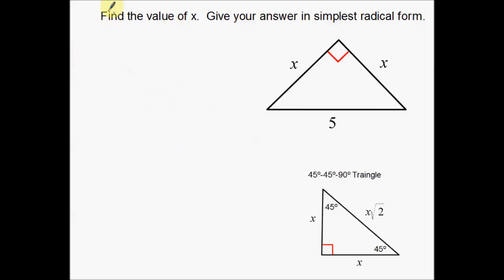The second example, same directions. Find the value of x, give your answer in simplest radical form. So here is our second triangle. In this case we know what the hypotenuse is, and we're going backwards to one of the legs. I've provided the picture down here again. If I go from the hypotenuse of this triangle back to one of the legs, I have to divide by the square root of 2.